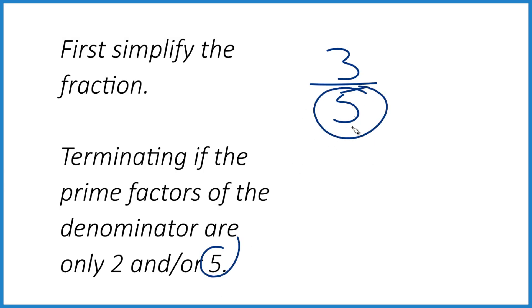How about 1/7? For 1/7, the prime factors of 7, it's just 7 here, right? Not 2 and or 5. So this here, it's going to be a repeating fraction, just like we found.